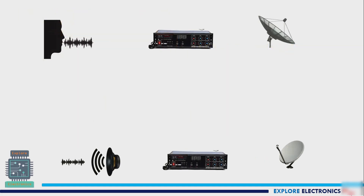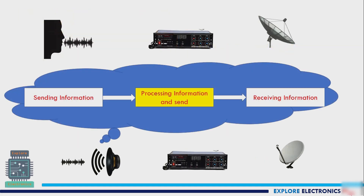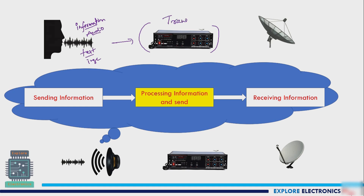Now let us look at the block diagram. Generally we have an information source — this information generated by a person could be audio, music, a text message, an image, or whatever. That will be given to the processing system called the transmitter. This transmitter performs some processing before transmitting, and we then give that to an antenna for transmission over longer distances.